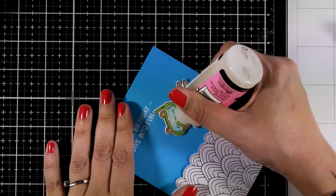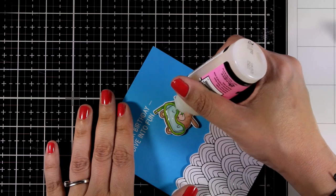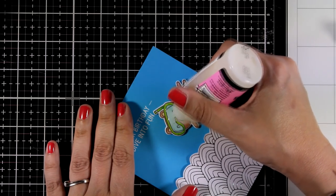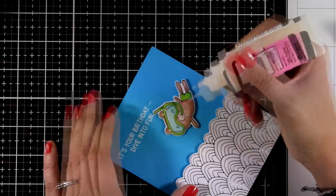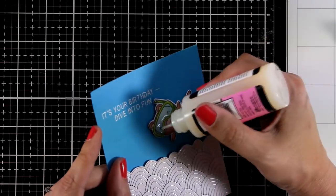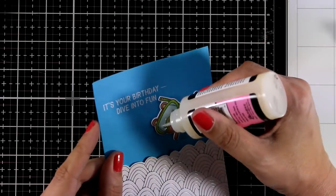And if you want to add an extra touch you can use some glossy accents. Now this looks a little bit milky but it's going to dry quite clear and it is going to give a lovely shine.